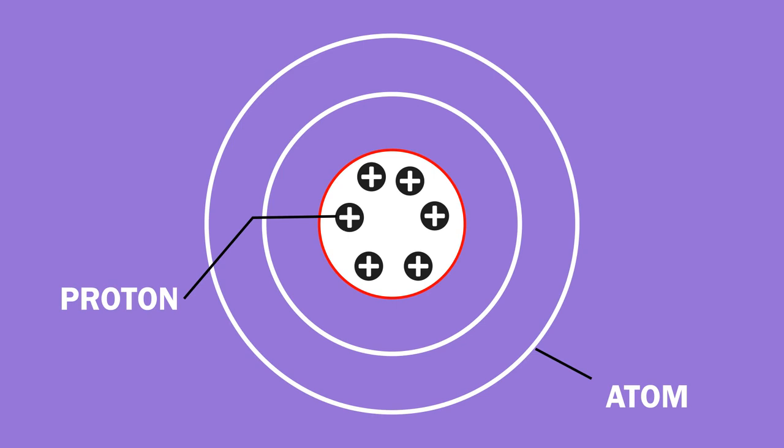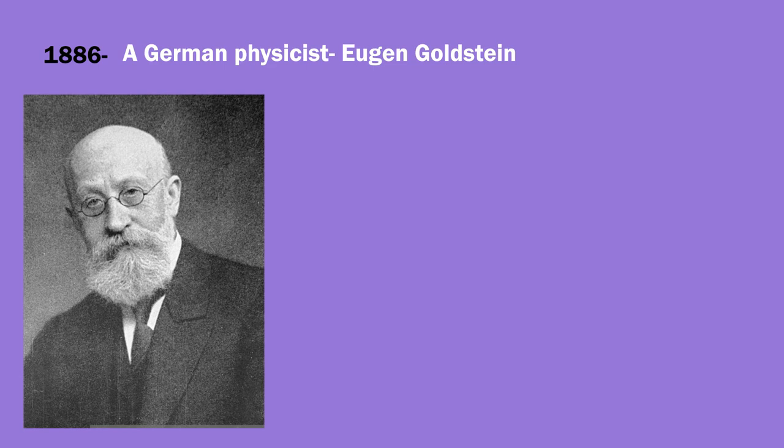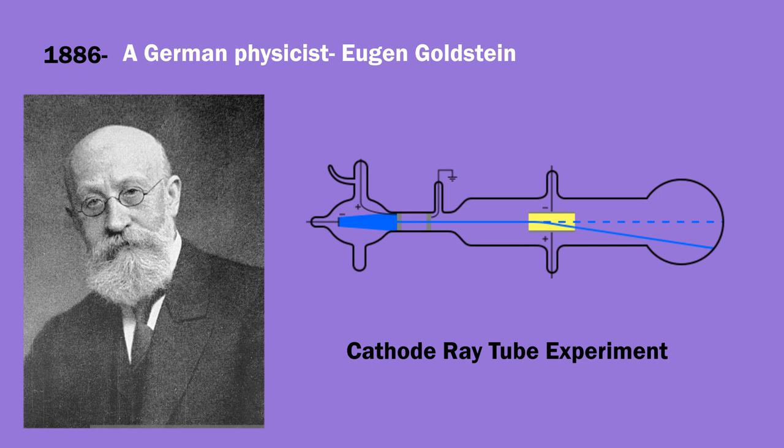Signs of existence of proton in an atom were observed way before the discovery of electrons. In the year 1886, a German physicist, Eugen Goldstein, performed an experiment similar to cathode ray tube experiment. Let's learn about this experiment of Goldstein.